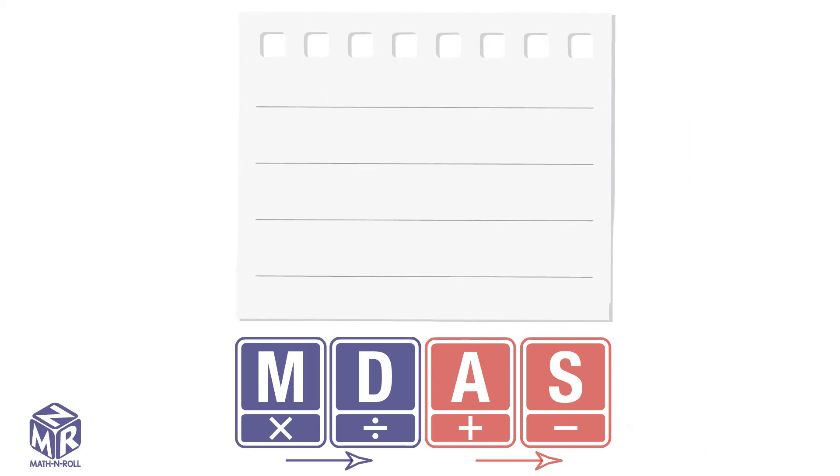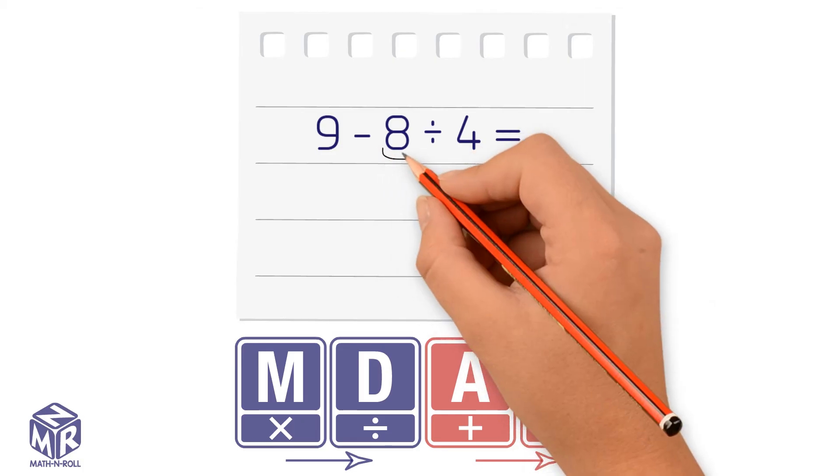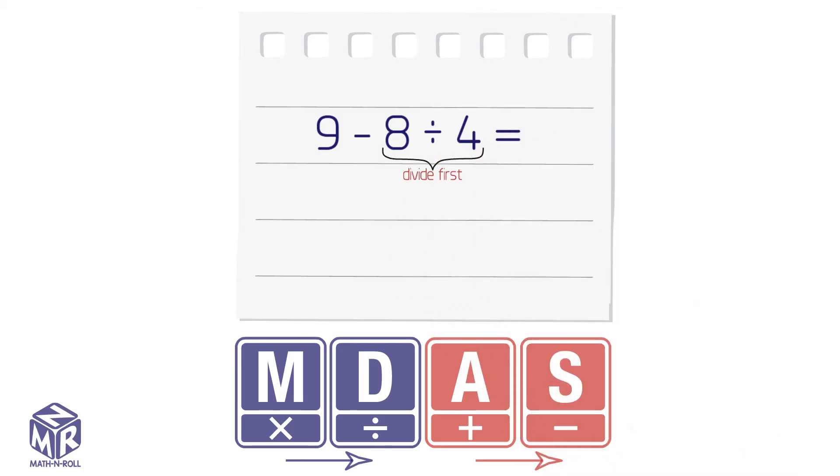Let's try another example. 9 minus 8 divided by 4. According to the order of operations, we divide first. 8 divided by 4 is 2. Now, we subtract. 9 minus 2 equals 7. So, the answer is 7.